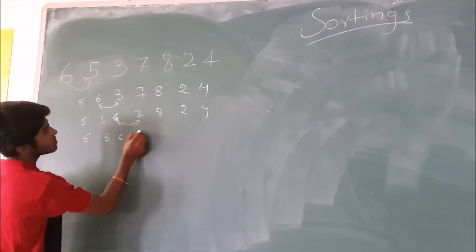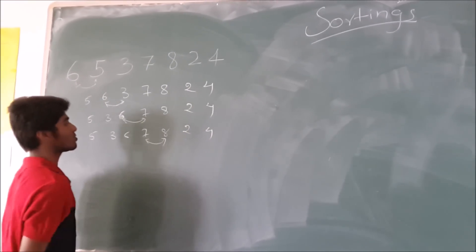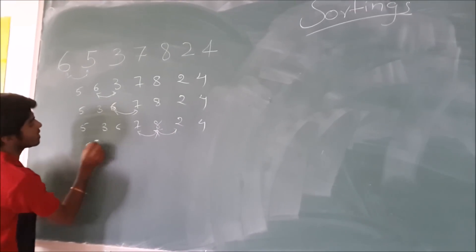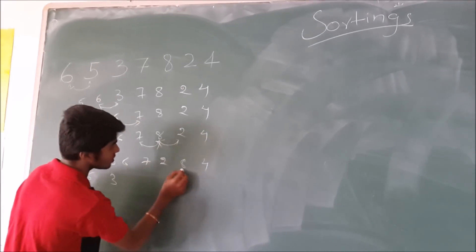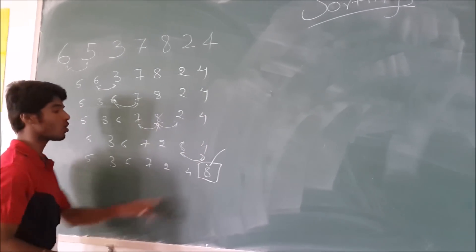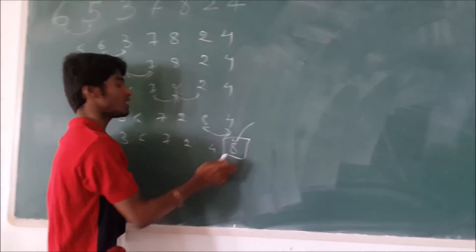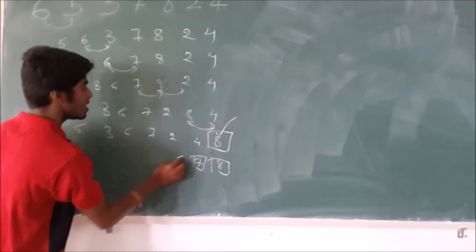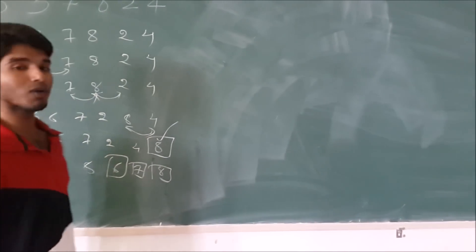So 5, 3, 6, 7, 8, 2, 4 will be left, and next 7 and 8 are compared — 7 is also smaller so no swapping will happen. Now 8 and 2 are compared; 8 is greater than 2, they will get swapped. And next 8 and 4 are compared, giving us 5, 3, 6, 7, 2, 4, 8. Thus we settle down the largest element among the set of elements at the end. In each iteration the largest elements get settled down.